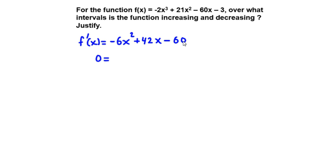We're going to factor out a 6 from this. So we have 6 times (-x² + 7x - 10). That's right, because we multiply 6 times all of this, we get that together. So if we divide by 6, we get 0 = -x² + 7x - 10.